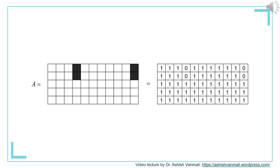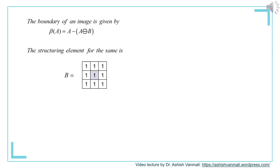For convenience, let's write this image in terms of 1s and 0s — all the white blocks will be represented by 1 and the grey blocks by 0. The boundary of an object in image A is given as β(A) = A minus (A erode B). The structuring element commonly used for boundary extraction is a 3×3 structuring element with all values 1, with the center at the second row, second column.